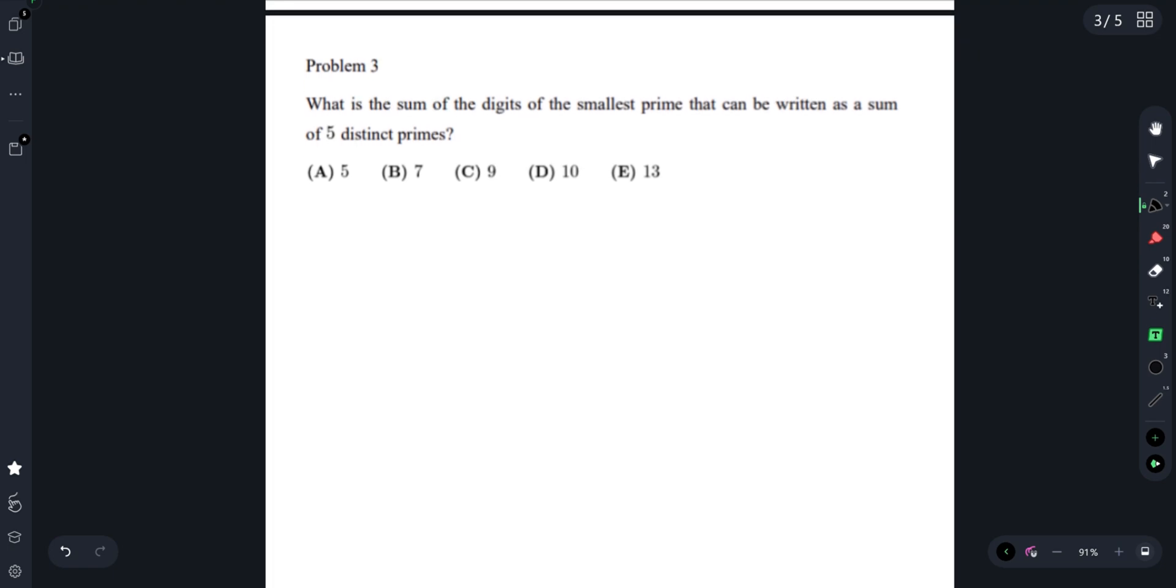Now moving on to Problem 3: what is the sum of the digits of the smallest prime that can be written as a sum of 5 distinct primes? The 5 smallest primes are 2, 3, 5, 7, 11. Adding these up, we get 13, 10, 18, 28, which is obviously not prime.